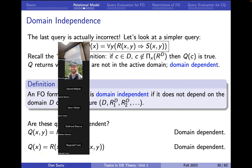The second query is more subtle. The answer is always finite because you only return the x's in your finite relation r. But the issue is with this existential quantifier: we need to check if there exists a y in the domain for which x and y is not in s. If the domain happens to contain only elements from s, then the answer is false. If the domain is bigger, then there is such a y. That's the domain dependence issue.